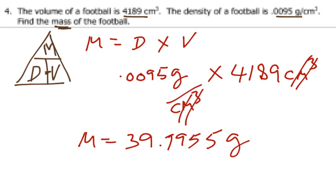But if we want to round this to the correct number of significant figures, we have to look at the problem and find the lowest number of significant figures in the problem. We look at the problem, there are four sig figs for 4189. And there's only two sig figs for 0.0095 because these zeros in front are placeholders. So how do we round this to two sig figs?